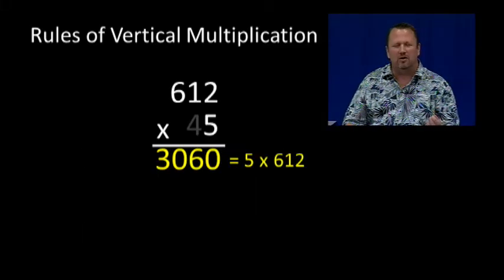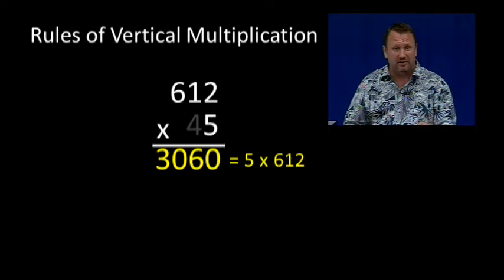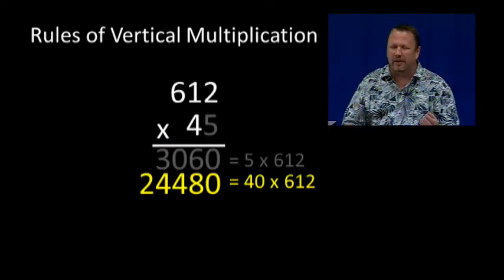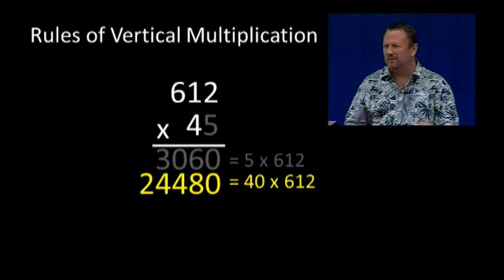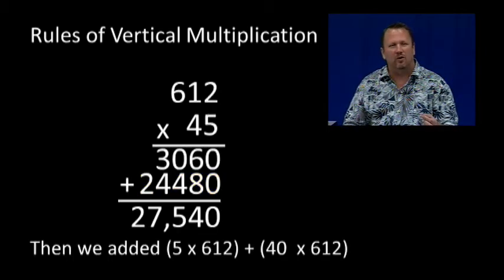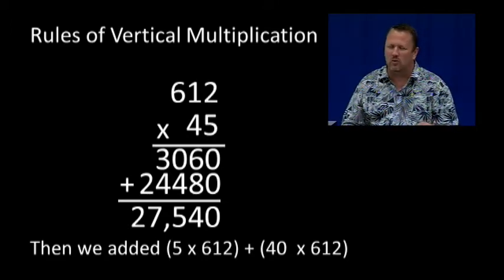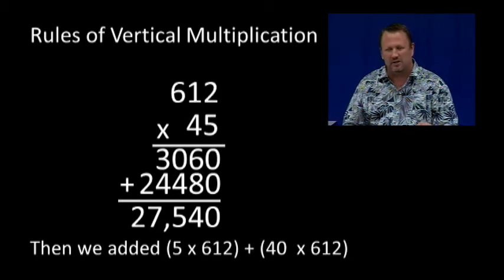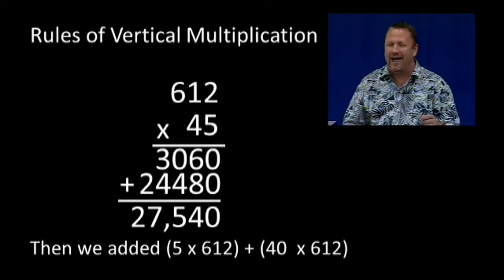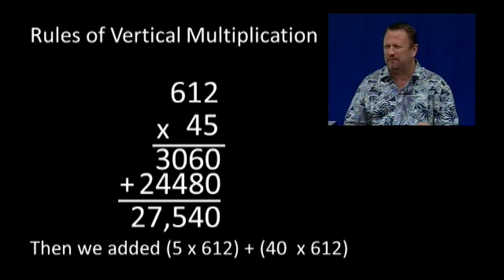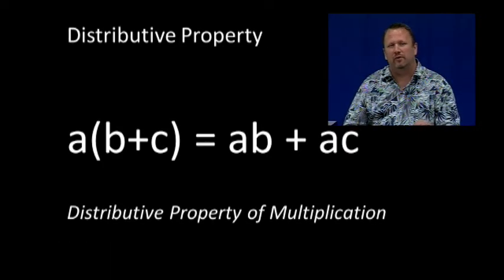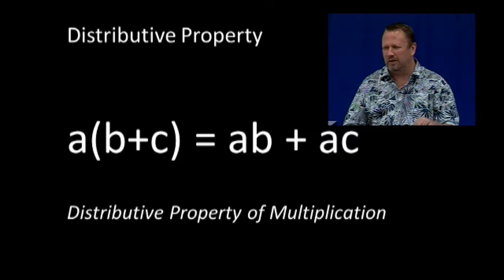Notice how we first multiplied 5 times 612, then we multiplied 40 times 612, and we added those together. We arrived at 27,540 by first multiplying 5 times 612, then adding 40 times 612. That's called the distributive property of multiplication.